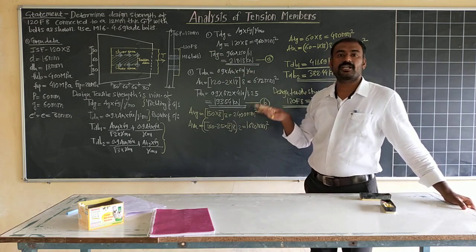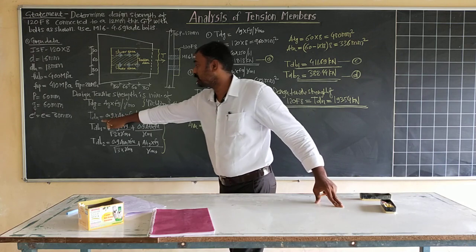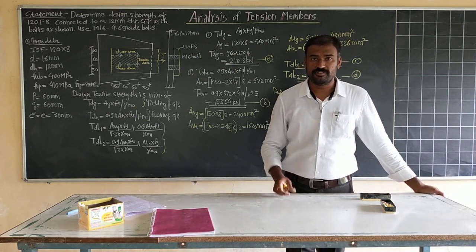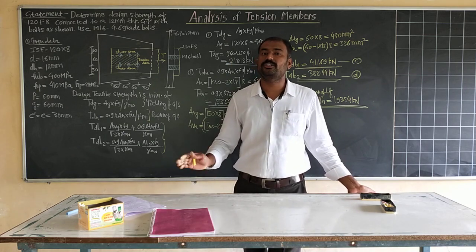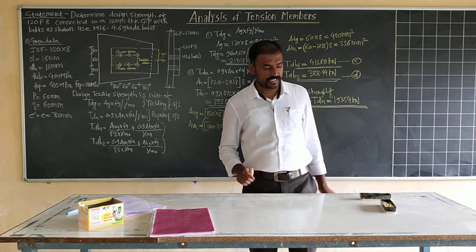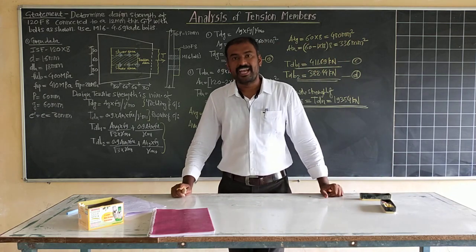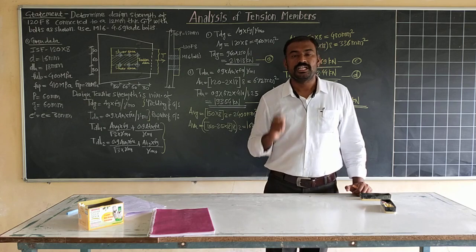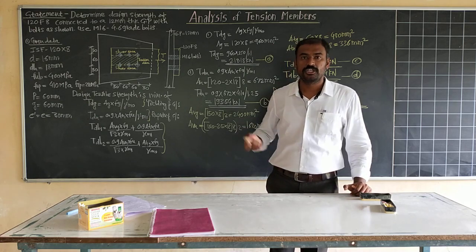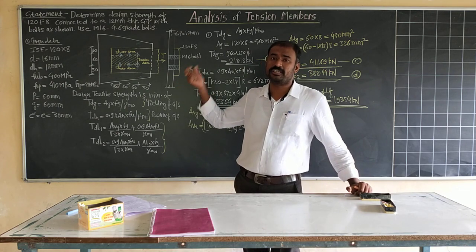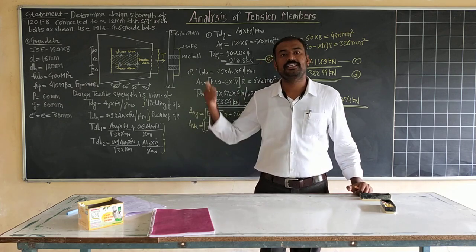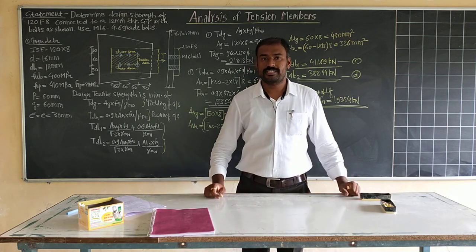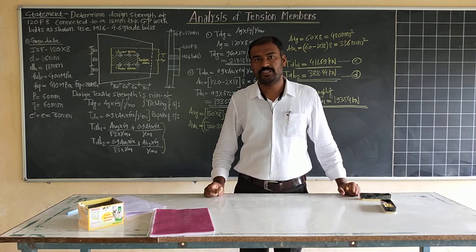The calculation steps remain the same for all tension member types, but the rupture calculation changes depending on the section type — threaded rod, Indian standard flat, or angle section. In design of tension members, there are analysis-type problems (calculating forces) and design-type problems (designing for a given force including connection design, then calculating TDG, TDN, TDB1, TDB2). In the next video, university question paper problems will be covered.